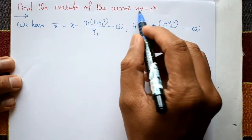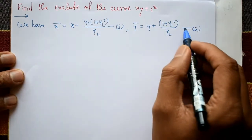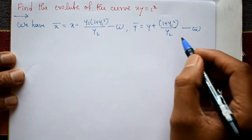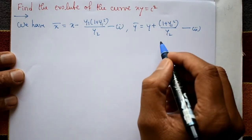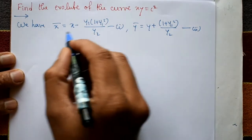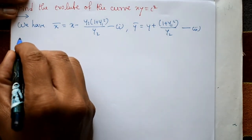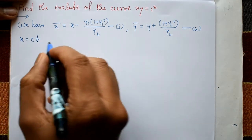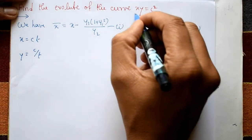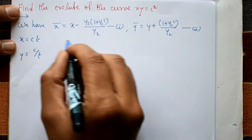Find the value of the curve xy equals c squared. We have x-bar and y-bar equations, equation number one and equation number two. We find x-bar and y-bar to get equations three and four. Now we consider the parametric form: x is equal to ct and y is equal to c by t. This parametric equation corresponds to the Cartesian form. We need y1 and y2.